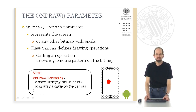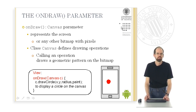We have the class and an object of class View. We have the onDraw method with a canvas parameter. This canvas parameter is used to call drawing operations like drawCircle, which draws a circle of a certain color on the screen.